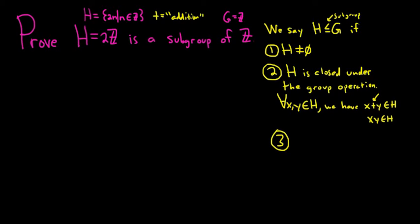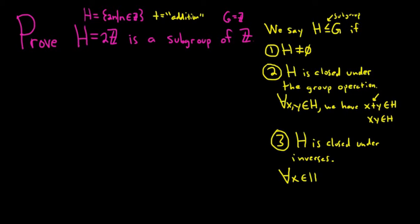Three: h is closed under inverses. That means that for every x in h, we have the inverse of x — so negative x — also in h. If you were using multiplicative notation, it would be x to the negative 1 in h.